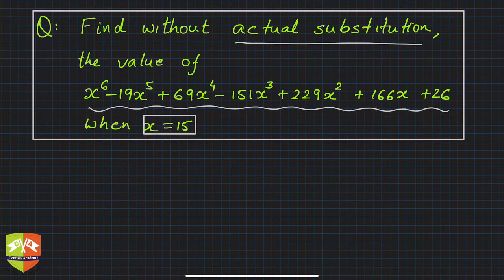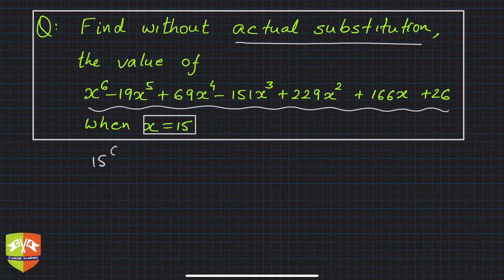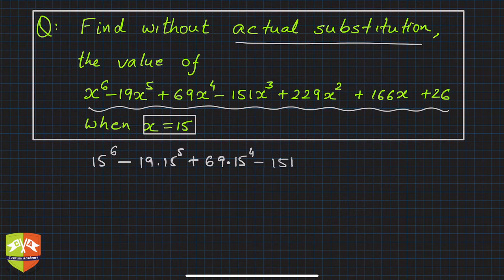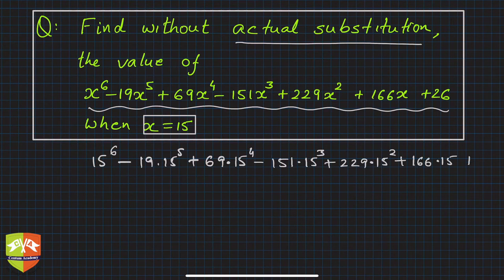If you put 15 into the polynomial, the calculation is going to be very tedious. To find the value of a polynomial, you simply put x equals to 15 - that means calculating 19 times 15 to the power 5, plus 69 times 15 to the power 4, minus 151 times 15 cubed, plus 229 times 15 squared, plus 166 times 15, plus 26. Calculating 15 to the power 6 is really tedious, so there must be an alternative way - and here is where the remainder theorem comes into play.